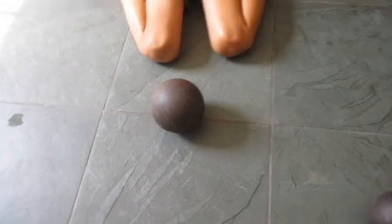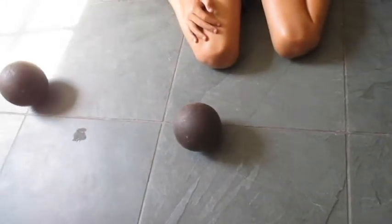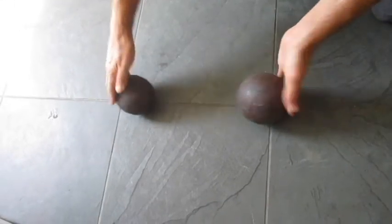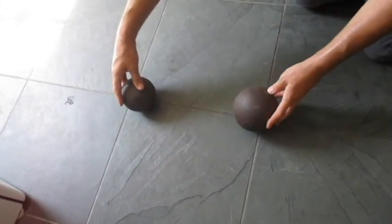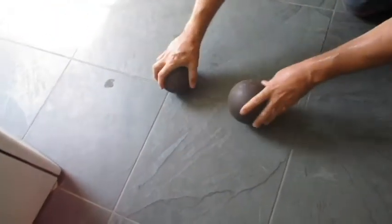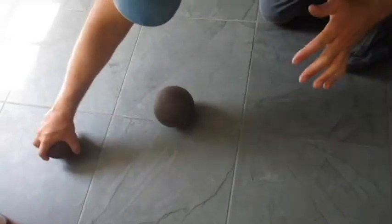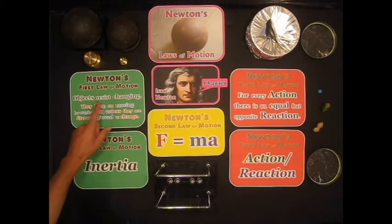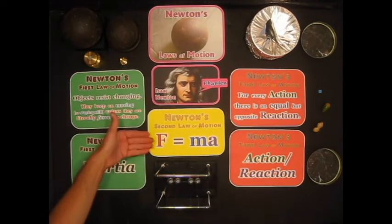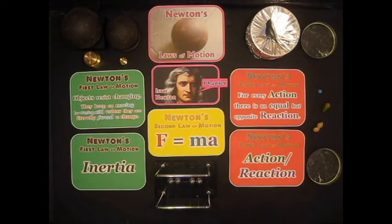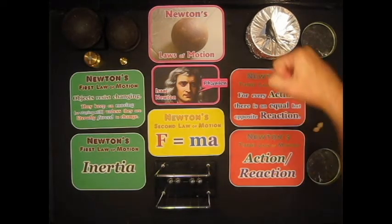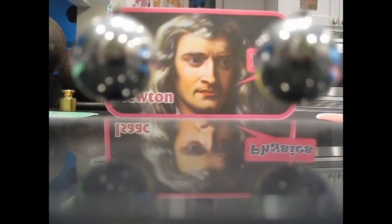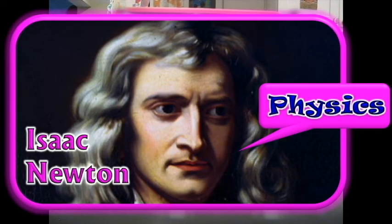Action, reaction. Action, reaction. I'll have this one going faster. Now this one going faster. And then they're at the same speed, but the same velocity. So, the first law is resisting change, inertia. The second law is the force is equal to the mass times the acceleration. The third law is action, reaction. For every action, there is a reaction.